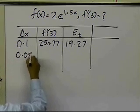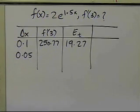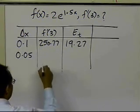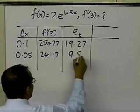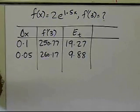For 0.05, which is half of the delta x which I chose, I get 260.17, and the error is now 9.88, that's the true error.